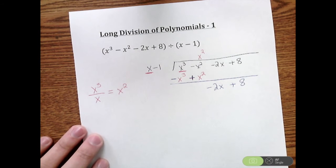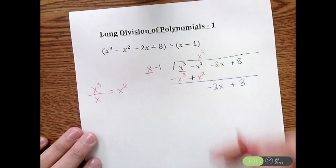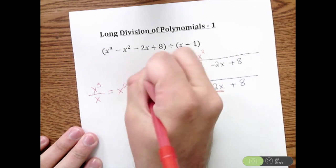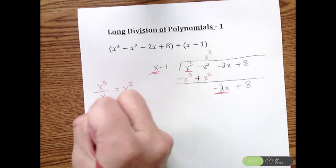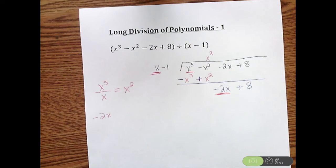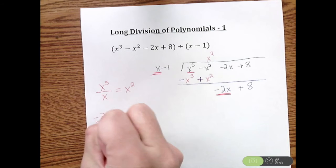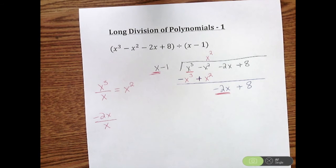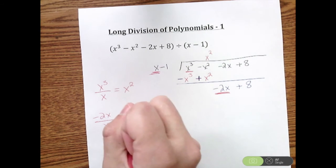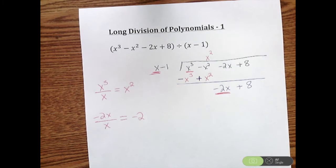I'm going to repeat that process I just did. So I'm going to take the first term and the first term. So I have negative 2X divided by X. So I had an X available, take an X away. That leaves us with just a negative 2.